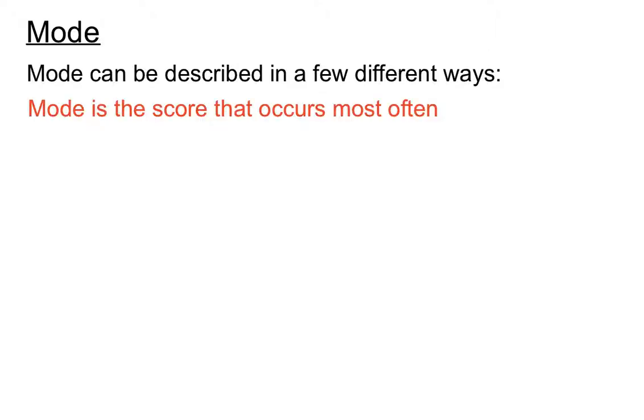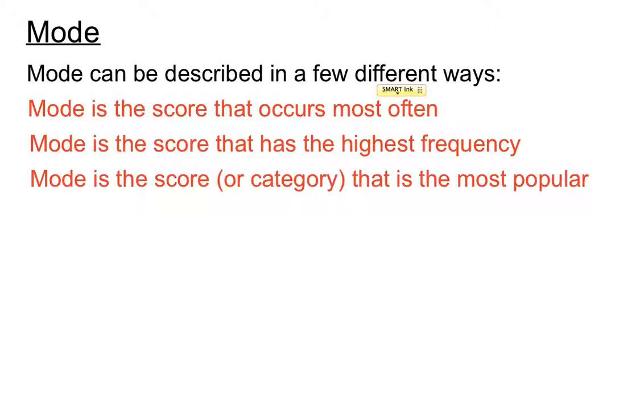The mode is the score that occurs most often. The mode is the score that's got the highest frequency. It's another way of saying the same thing. And sometimes the mode is the score that's the most popular.